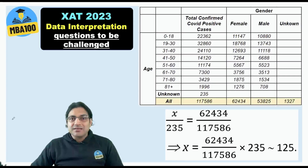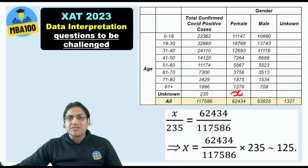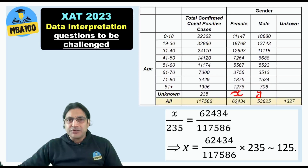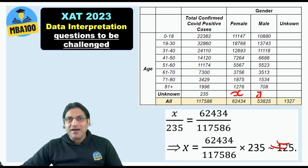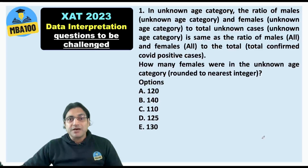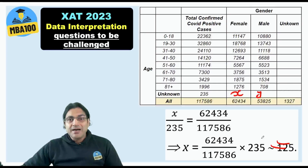Here you are asked: if the unknown value is X and another is Y, then X to 235 should be the same ratio as 62,434 to 1,17,586. So when you calculate it, X divided by 235 equals 62,434 divided by 1,17,586, and you ultimately get 125, which was certainly one of the options — option D.